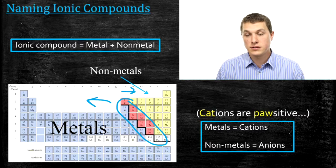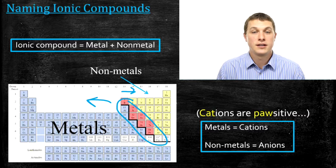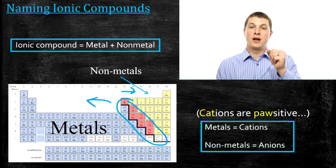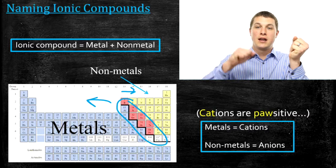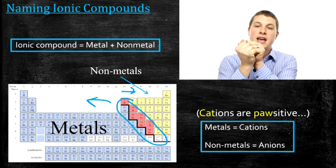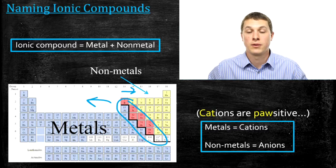Metals tend to form cations, or positively charged ions. Non-metals tend to form anions, or negatively charged species. If I put together a metal, which is positively charged, and a non-metal, which is negatively charged, they're held together by that difference in charge — and that makes an ionic compound.